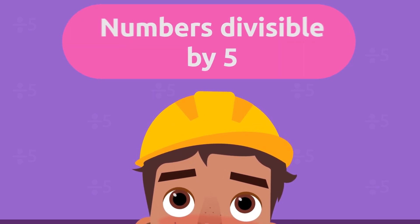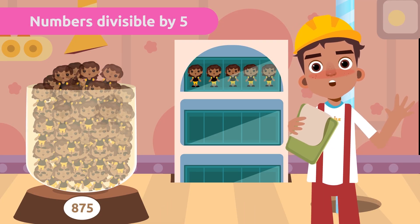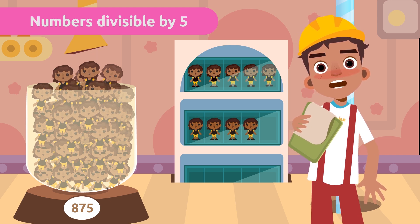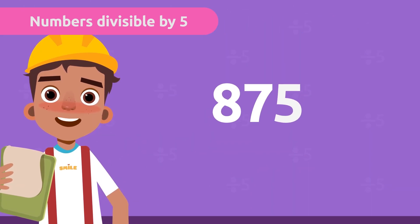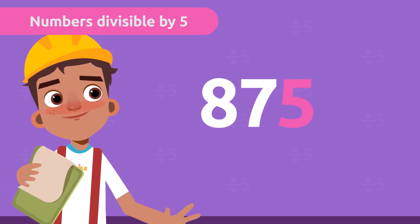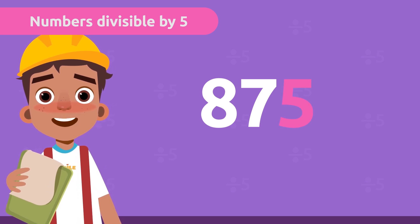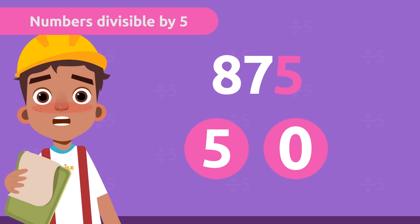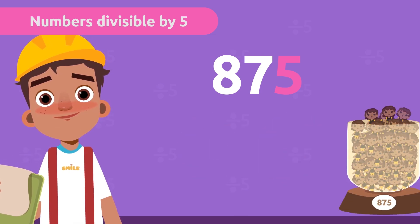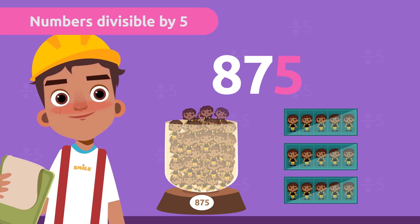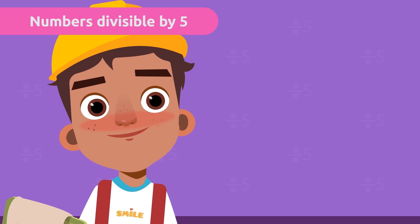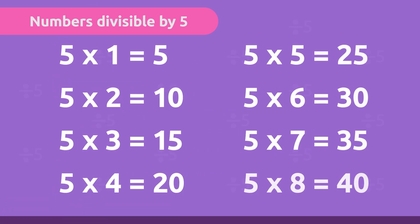Numbers divisible by five. Here we have dolls. In this case, we want to keep five in each box. To find out if we can divide them into boxes of five, we use the divisibility rule of five. To find out if a whole number is divisible by five, we only have to look at the last digit — it's super easy. Every number ending in five or zero is divisible by five. There are 875 dolls, so if we store them five by five, there will be none left over. Think of the multiplication table of five — all the results end in five and zero, just as in our divisibility rule of five.